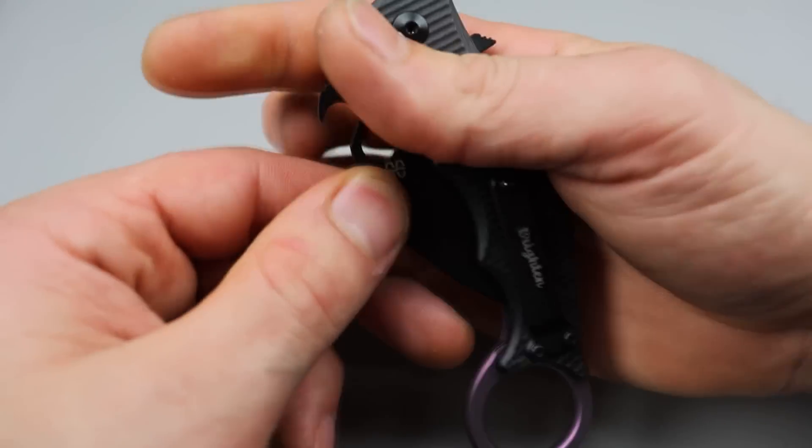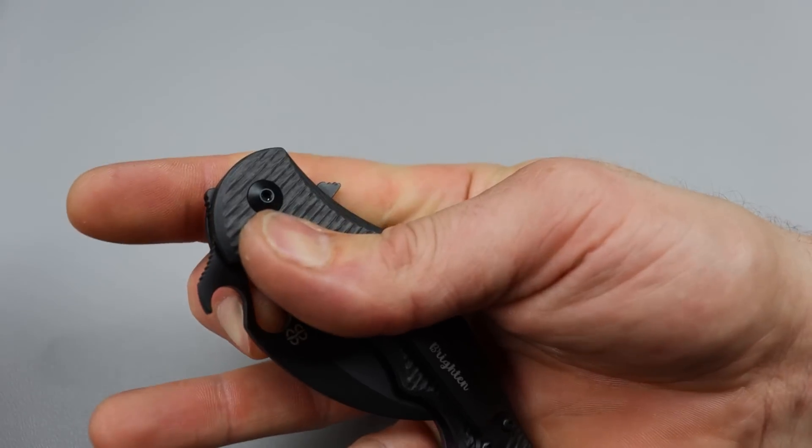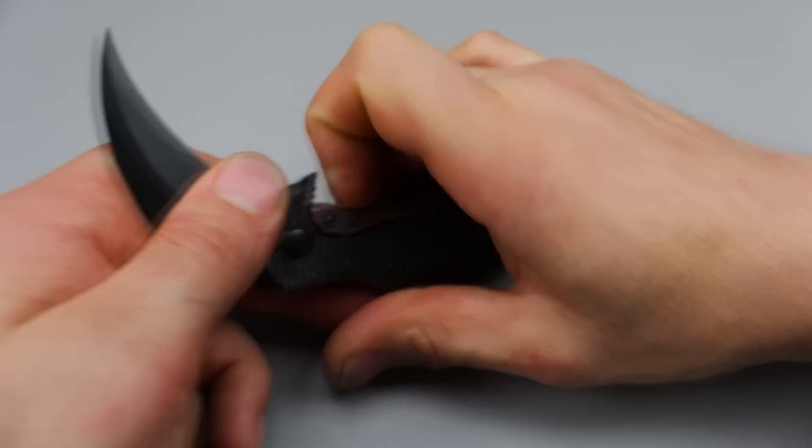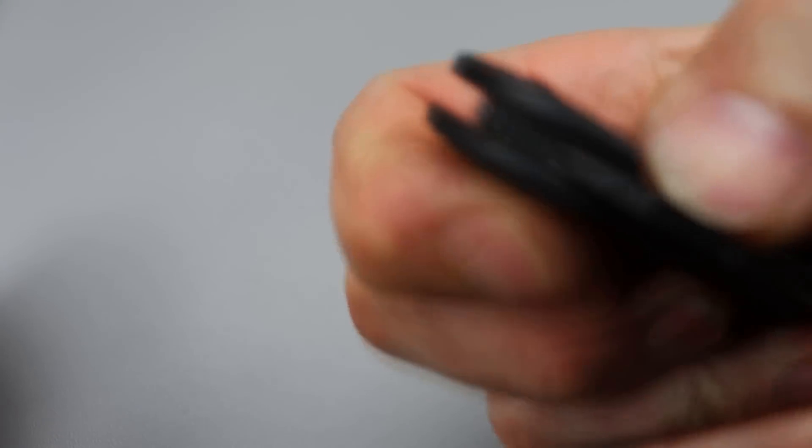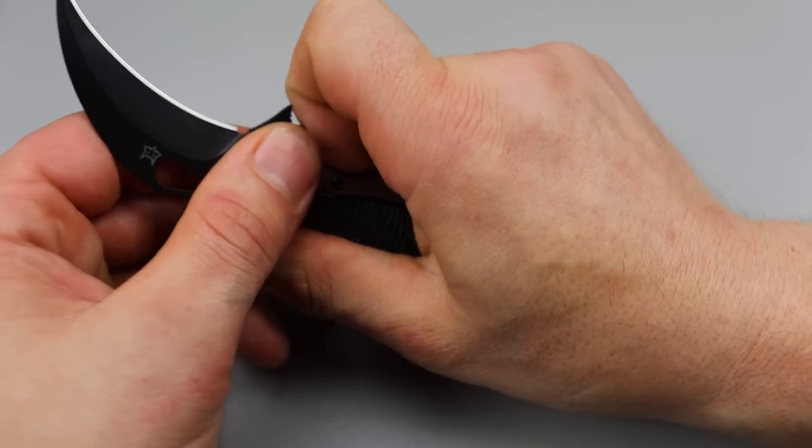And then you have this hole deployment that's pretty easy to get to. Again, super duper snappy. You can also thumb flick it. Nice, strong detent.